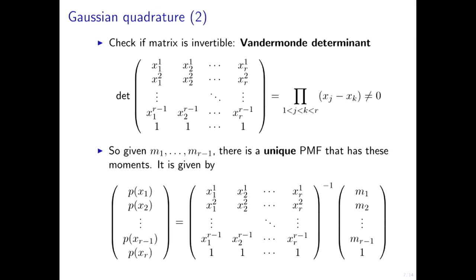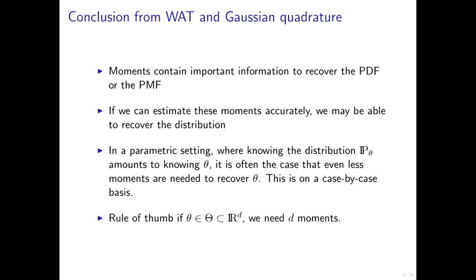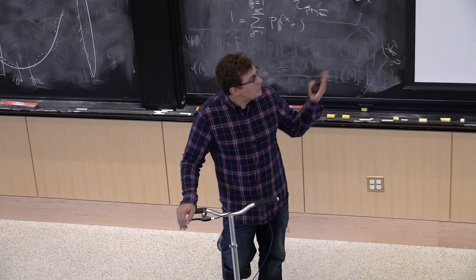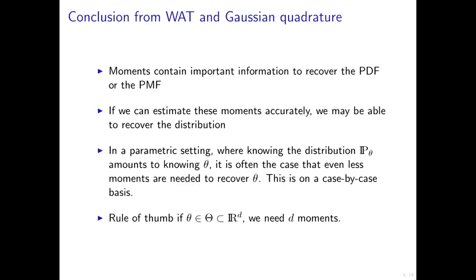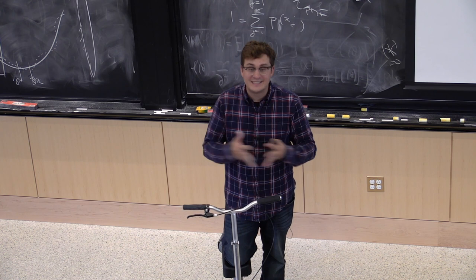The statistical conclusion: moments contain important information about the PMF and PDF. If we can estimate moments accurately, we can recover the parameters of the distribution. In a parametric setting with identifiability, often fewer moments are needed — if theta is d-dimensional, typically just d moments suffice. The method of moments says: if theta is in R^d, compute d moments and solve.